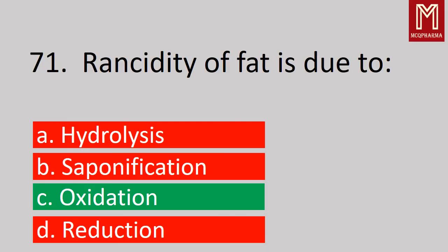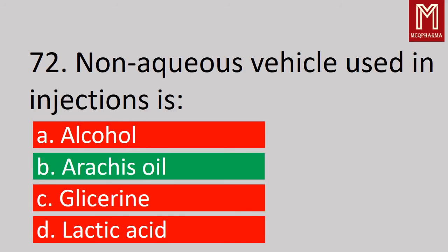Question number 71: Rancidity of fat is due to — correct answer, Option C: Oxidation. Rancidity of fat is due to oxidation.